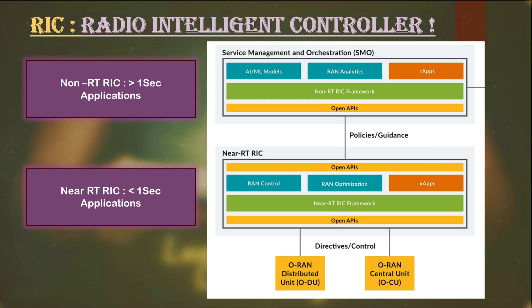RIC stands for Radio Intelligent Controllers, and we have two types of RICs in Open RAN. The first is Near Real-Time RIC and the second is Non-Real-Time RIC. Near Real-Time RIC handles functionalities that are time-sensitive, meaning the network should act fast on the decision — performing actions within 10 milliseconds to 1 second.